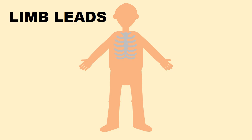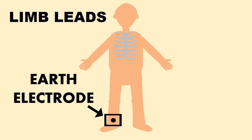One of the four electrodes on the limbs — the one attached to the right leg — is an earth electrode that helps minimize the artifacts, so it doesn't record the electrical activity. The other three electrodes are attached to the right arm, left arm, and left leg.